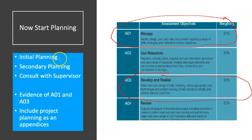So now begin your planning. You could divide it into initial and secondary planning. Make sure that you contact your supervisor — discuss the project planning with them and show them the plan; it gives you something really tangible to talk about. Remember that the supervisor is not there to help you with the content, but they can certainly help you with the planning process. Keep evidence of your AO1 and AO3 at all times, and anything that is really useful we will think about putting into the appendices of the project. Thank you so much for listening. Good luck with your planning, and remember the main message is flexibility — you choose the method that suits you, as long as it communicates clearly to your supervisor, coordinator and examiner, and gives evidence that you planned, thought, and monitored.